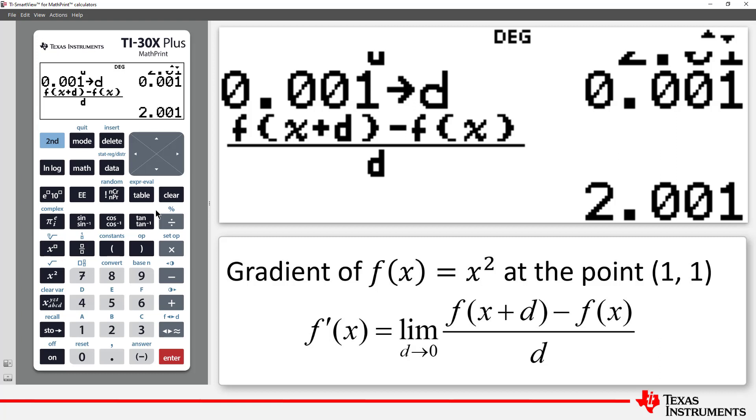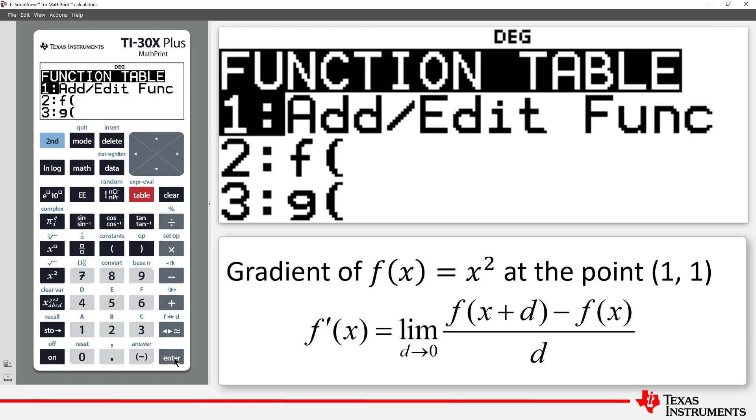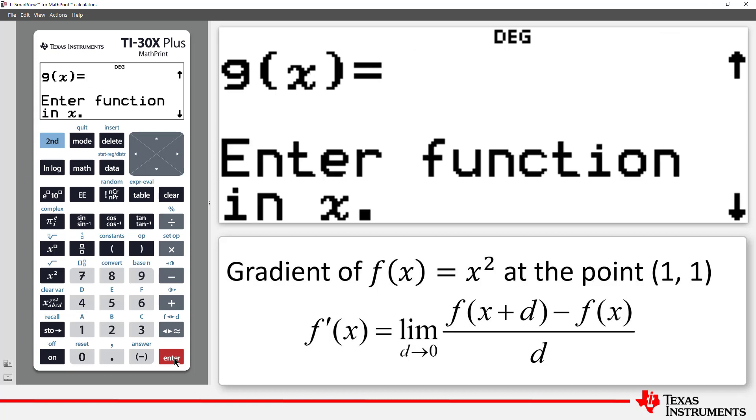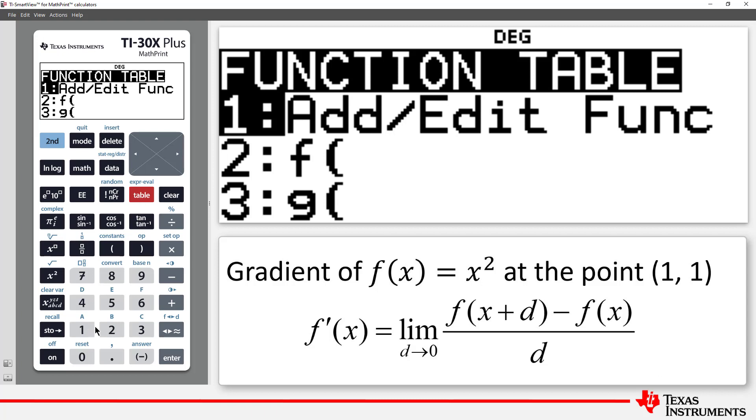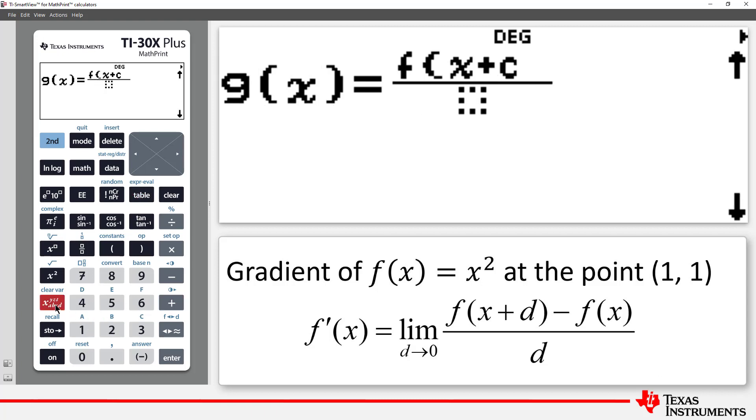We could explore other points one at a time, but let's work efficiently. Return to the function definitions. F of x remains the same, but let's define g of x to be the gradient of the secant. Press Enter.